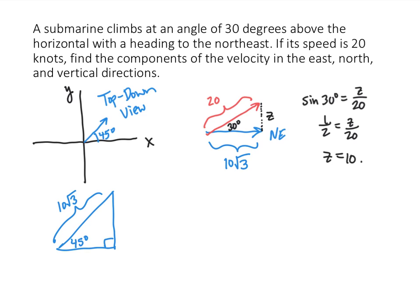So again, using trig or just properties of right triangles, the sine of 45 degrees is going to be the y component divided by 10 radical 3. And if I call that x, the cosine of 45 degrees is going to be x divided by 10 radical 3.